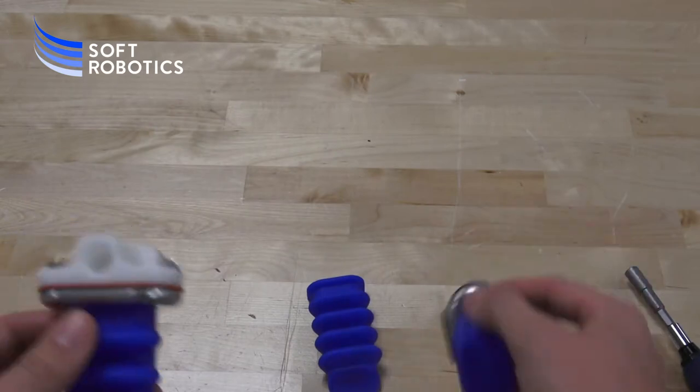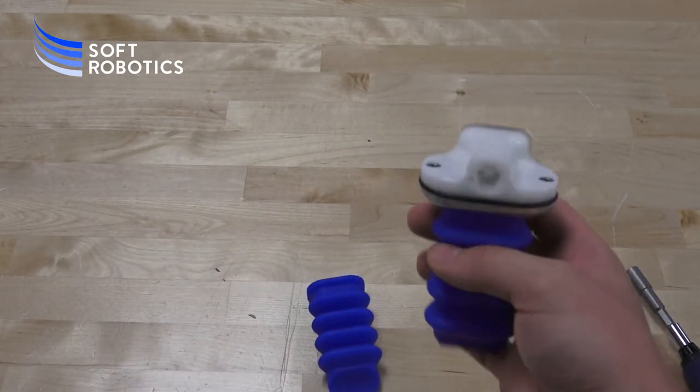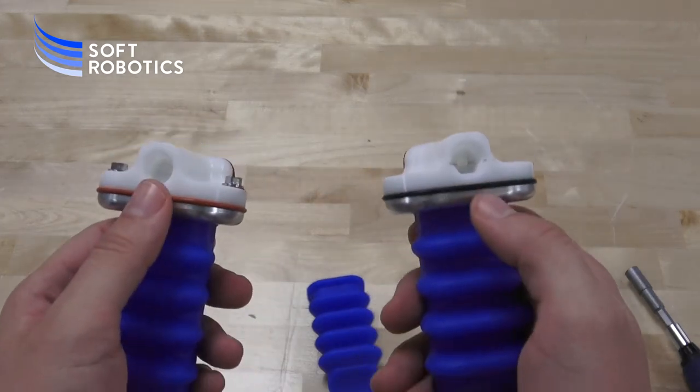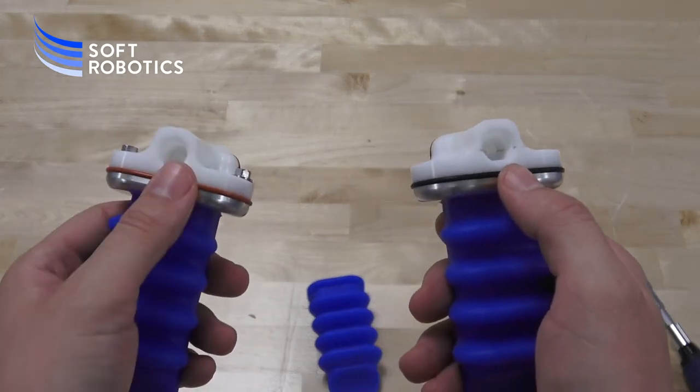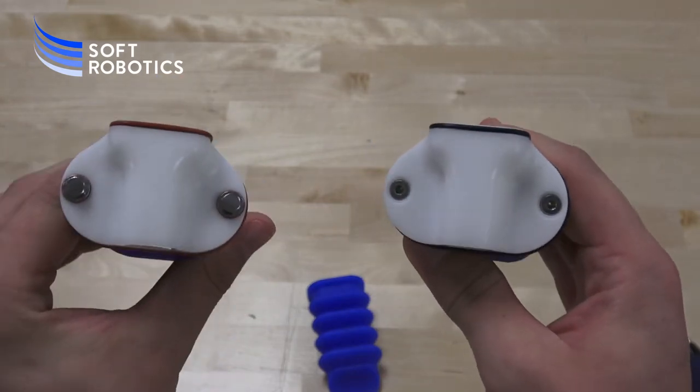So there's two types of finger modules. There is a food safe, which is this here on the left, and there is an industrial, which is here on the right. The two differences being the O-ring type, so this is silicone and this is NBR, and then also the screws that hold everything together.